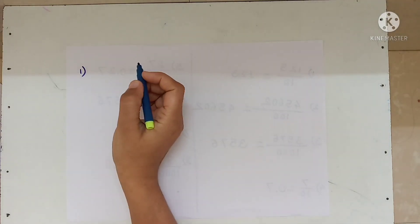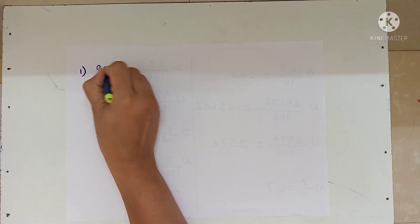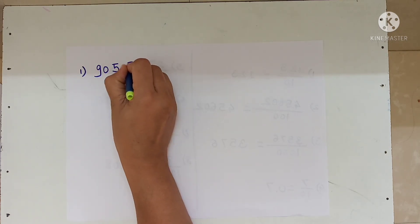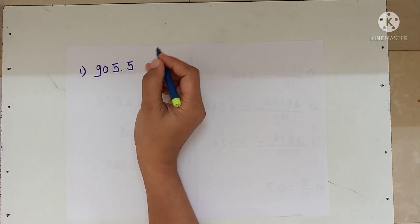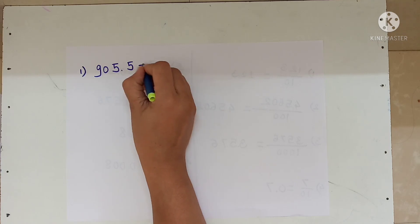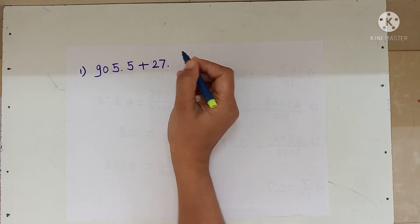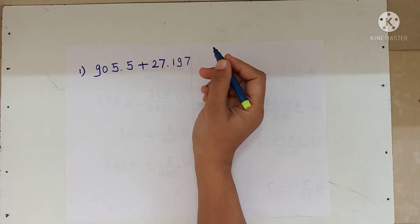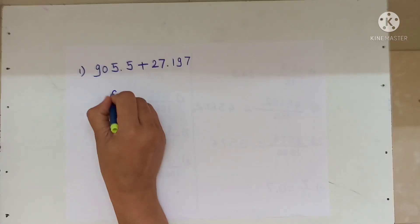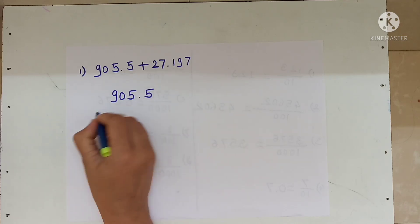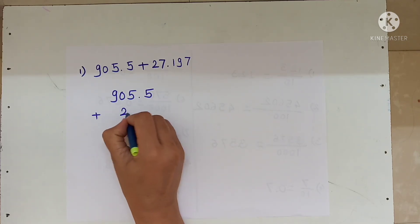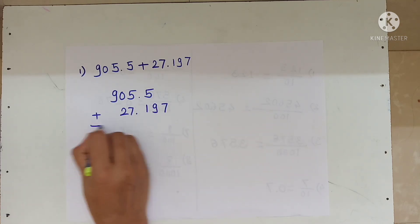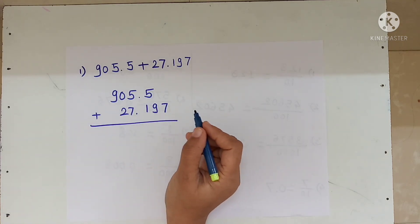First example, 905.5 plus 27.197. We have to add these decimal fractions.